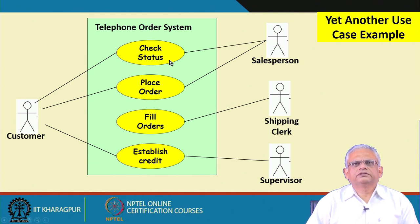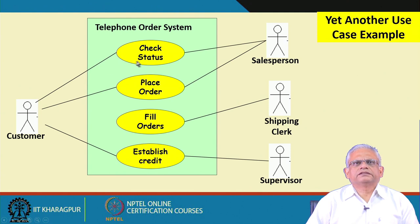Now let us look at a slightly larger example: a Telephone Order System, which is an e-commerce software where orders are placed over the telephone. The customer telephones the system, a message is played, and the user can choose an option. Both the customer and the salesperson can check the status of an order — they may use different interfaces.